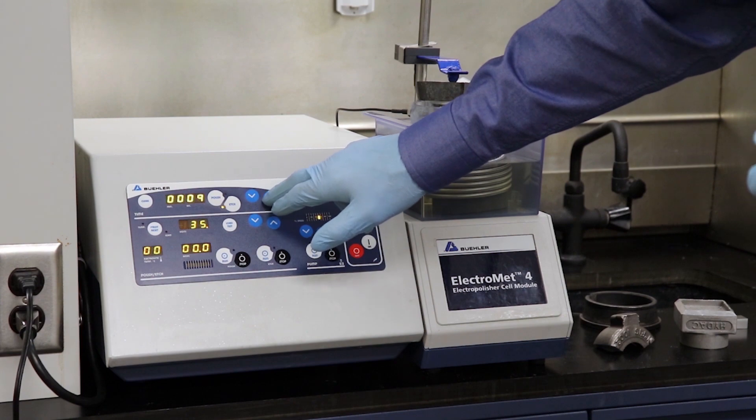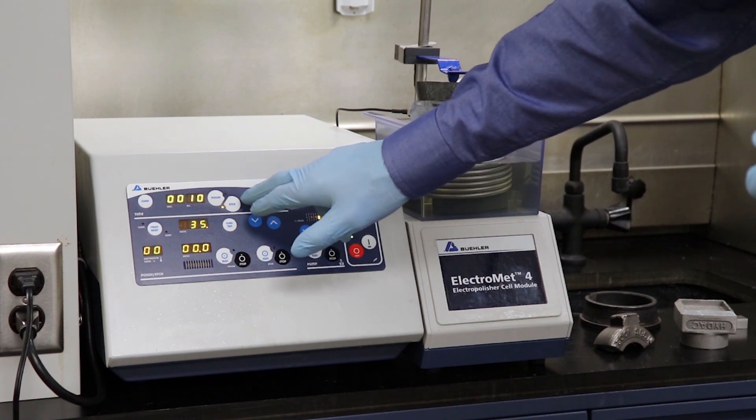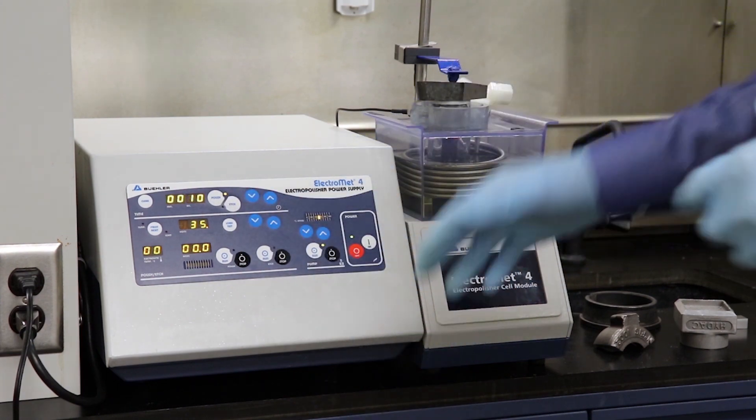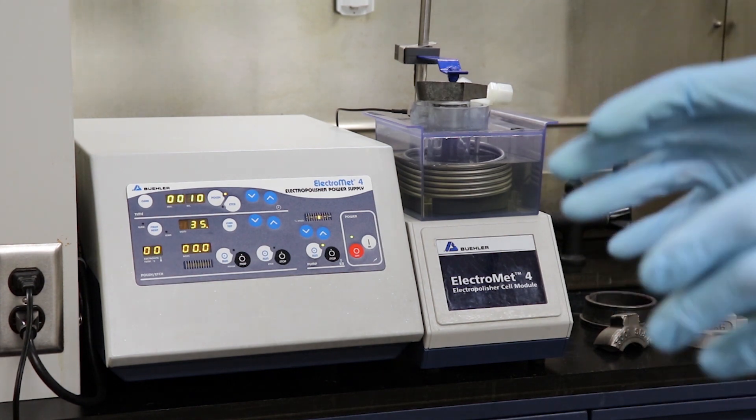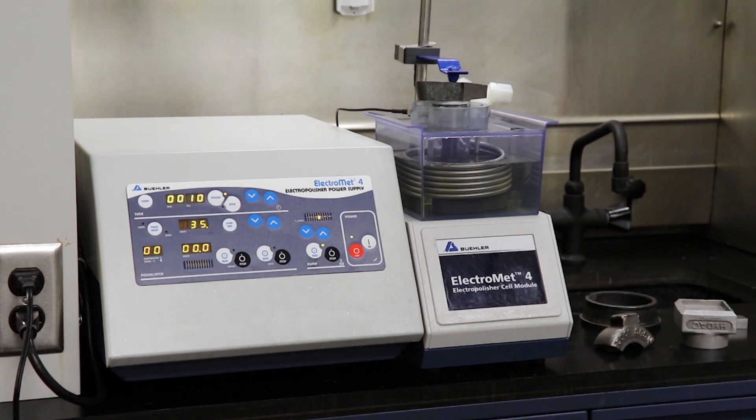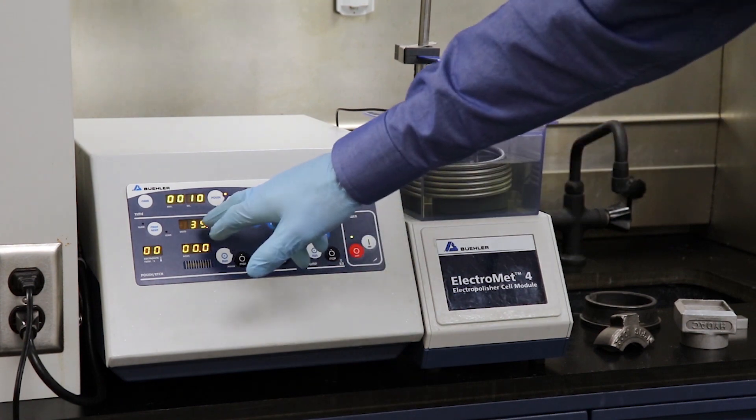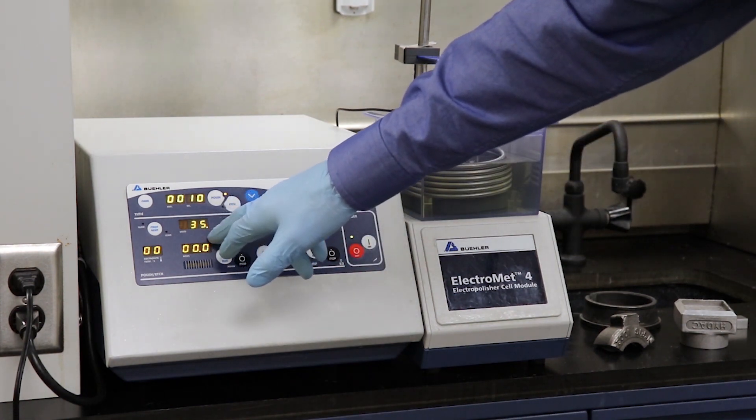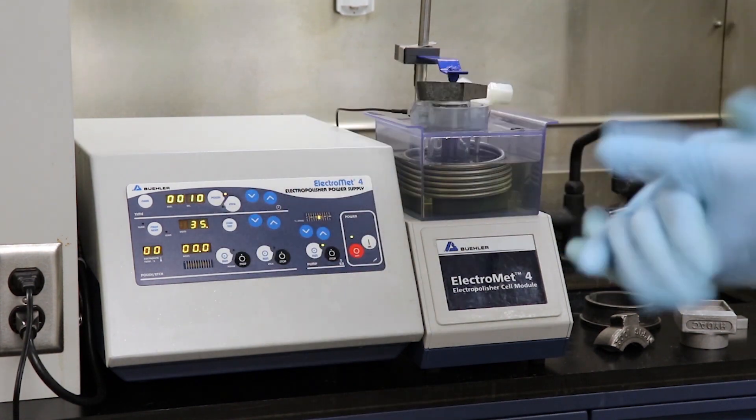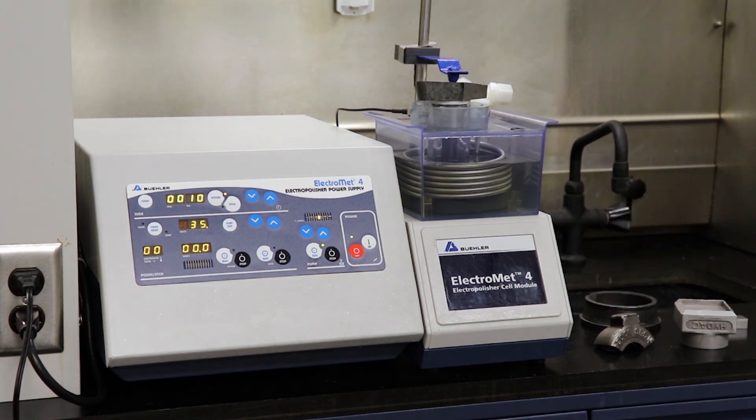I'm going to set up an etch cycle of 10 seconds as well. Now the machine is going to begin on the polishing cycle. It's going to polish for 10 seconds. After polishing, it's going to reduce the voltage by a factor of 10, so it's going to reduce our 35 volts to 3.5 volts and enter an etch cycle for another 10 seconds, at which time our preparation will be complete.